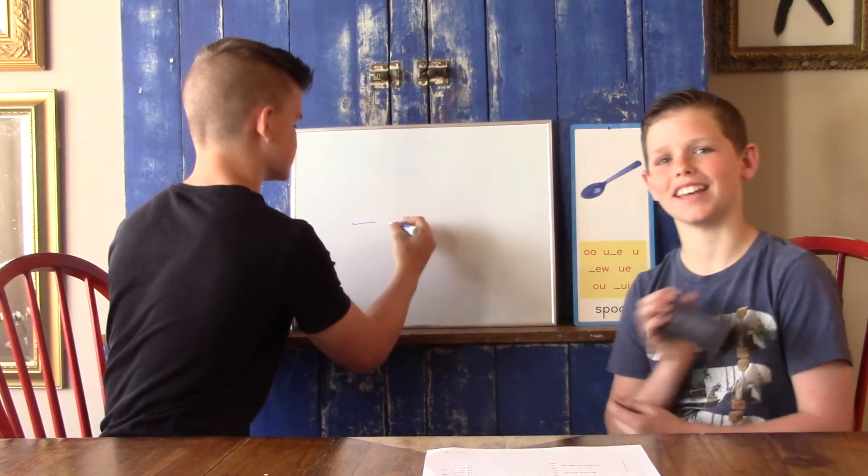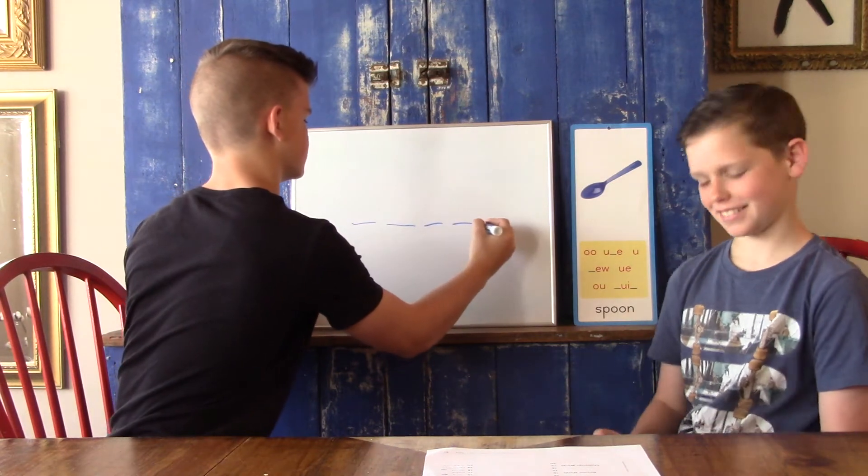Alright. K. O-O-I-N-S. Yeah. K. O-I-N-S-Z. Z. Yep. Coins. Alright. So, we're going to have four sounds. Yes.